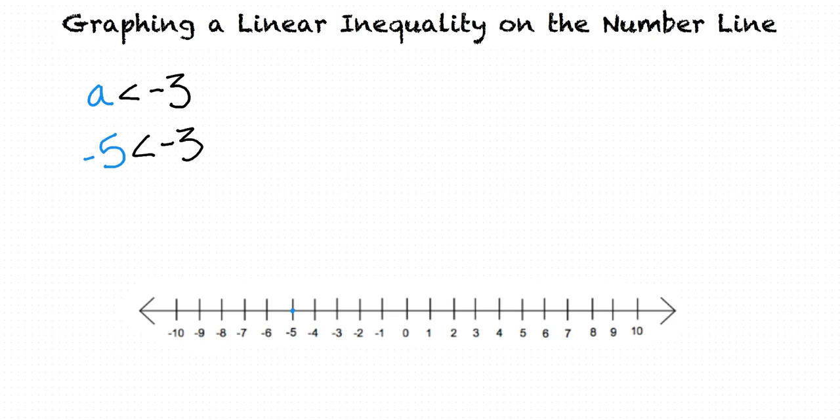To do this, first we plot the point a equals negative 3 with an empty circle. Sometimes I've seen a filled in circle instead of an empty circle. What's the difference? Well, a cannot equal negative 3, since negative 3 is not less than negative 3. It's equal.